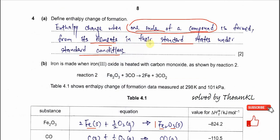Standard conditions means 298 Kelvin and 1 atm, which is about 101 kilopascals.